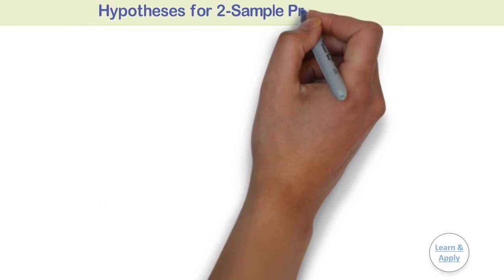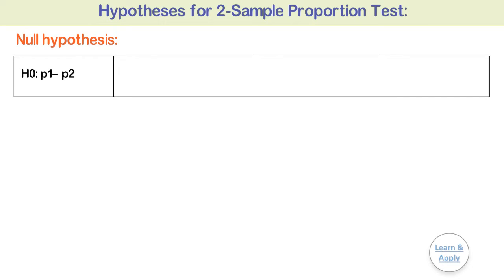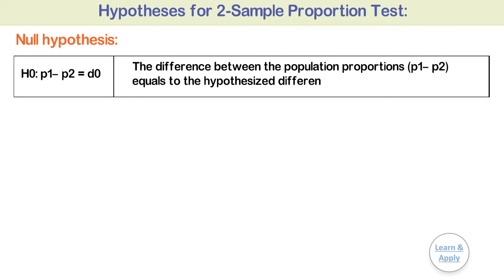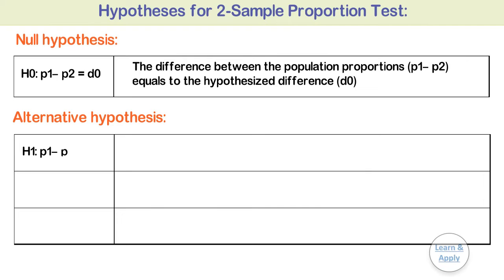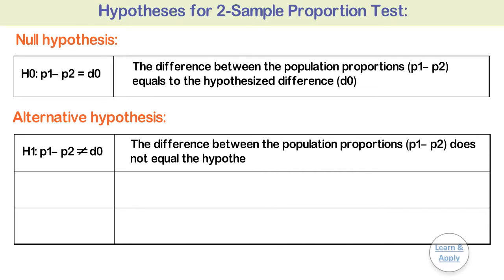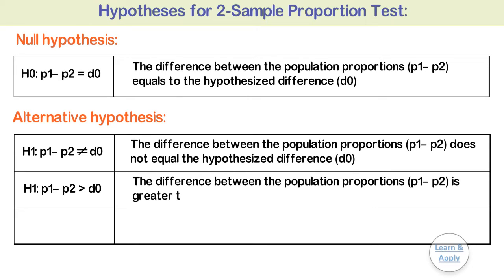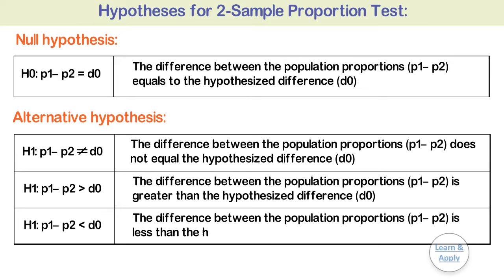Hypothesis for 2 sample proportion test. For a 2 sample proportion test, the hypotheses are as follows. Null Hypothesis H0: P1 minus P2 is equal to D0 — that is, the difference between the population proportions P1 minus P2 equals the hypothesized difference D0. Alternative Hypothesis — select one of the following: H1: P1 minus P2 is not equal to D0; or H1: P1 minus P2 is greater than D0; or H1: P1 minus P2 is less than D0.